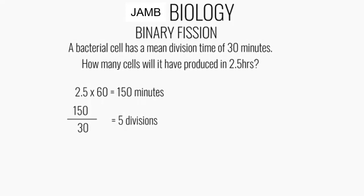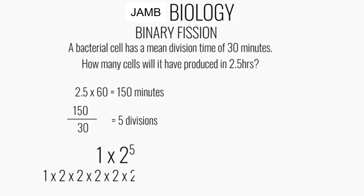To determine the total number of cells produced, we need to understand that in binary fission a cell splits into two. Starting with one cell, we calculate one times two raised to the power of the number of divisions. In this case, that is 1 × 2⁵, which equals 1 × 2 × 2 × 2 × 2 × 2 = 32 cells.